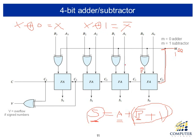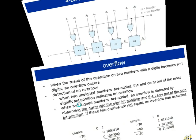So this construction, depending on control signal M, can achieve either addition or subtraction. If the two numbers are signed numbers — where the most significant bit represents the sign, positive or negative — then we may have an overflow condition. The overflow condition is easily detected using an exclusive OR on two specific carry signals, as explained in the next slide.